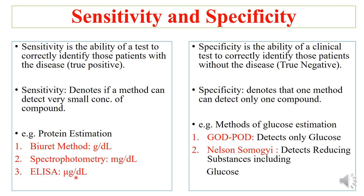The third method is ELISA, which measures proteins in micrograms per deciliter concentration. Certain proteins like tumor markers and certain protein hormones are released in very small concentrations and can neither be detected by the biuret method nor the spectrophotometric method, but are accurately detected by ELISA. So different methods have different sensitivity and therefore they are used differently.